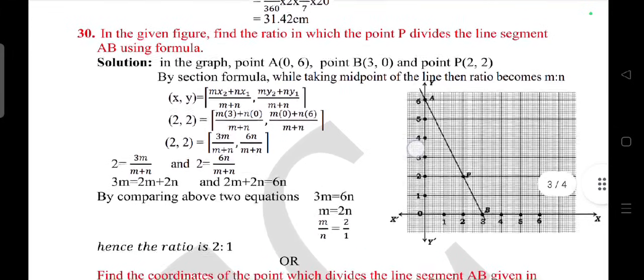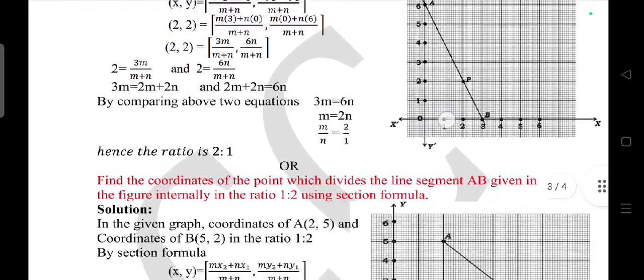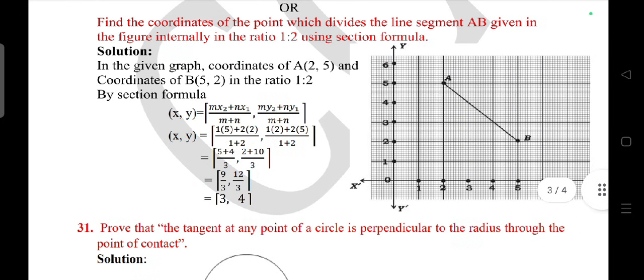In the given figure, find the ratio in which the point P divides the line segment by using the formula. This is the answer. Or find the coordinate of a point which divides the line segment AB in the given ratio internally 1 to 2.